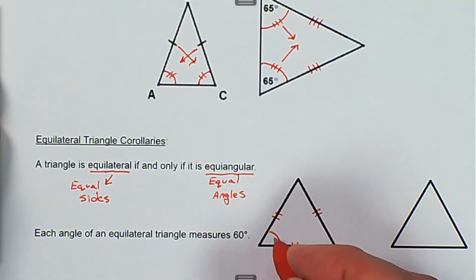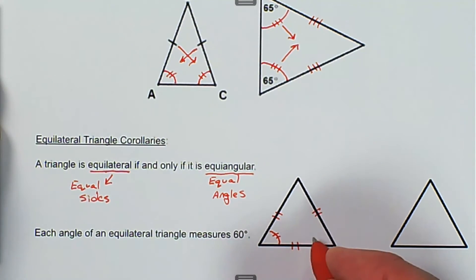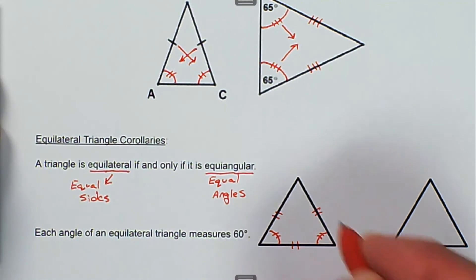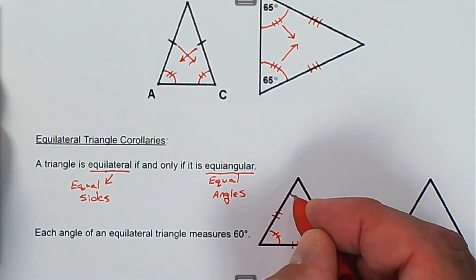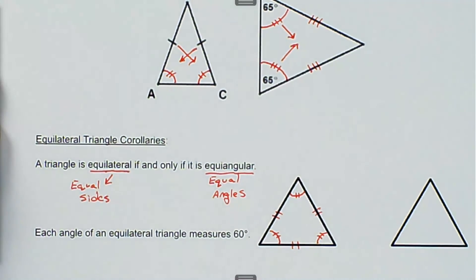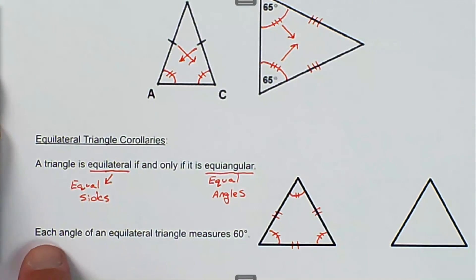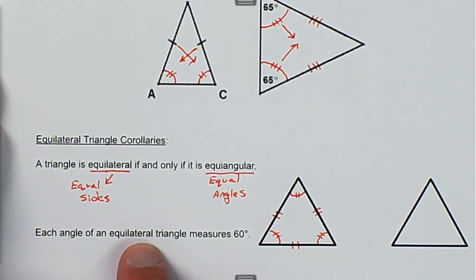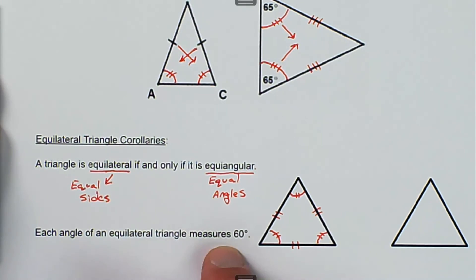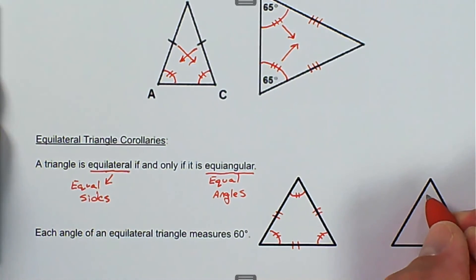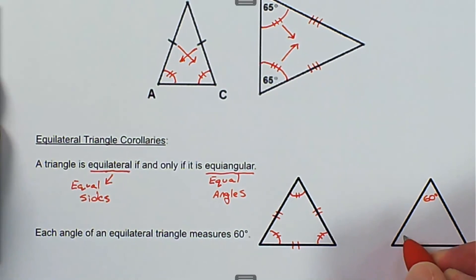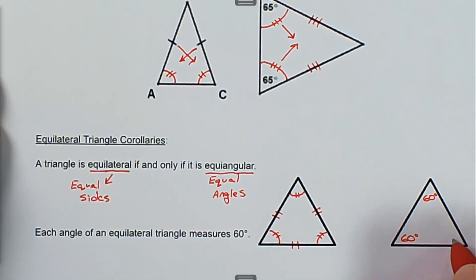So if all the sides are congruent, then all the angles are congruent. Each angle in an equilateral or equiangular triangle measures 60 degrees — if they're all equal, they all have to measure 60 degrees.